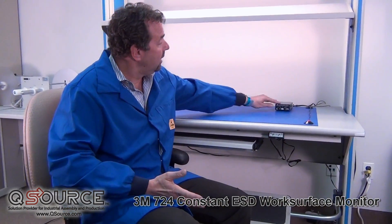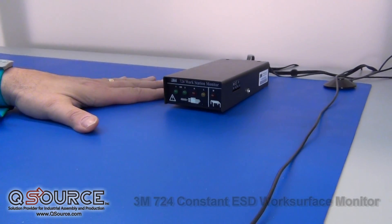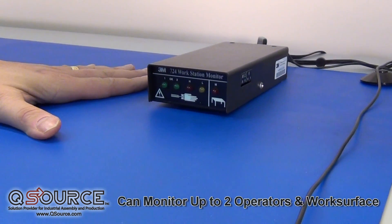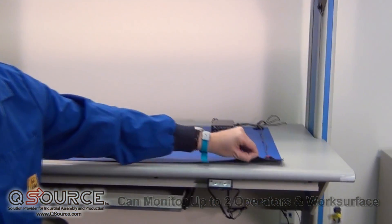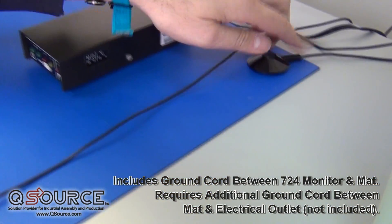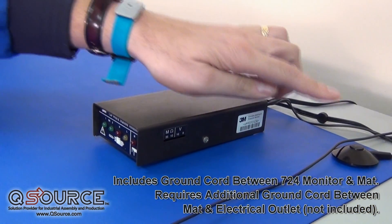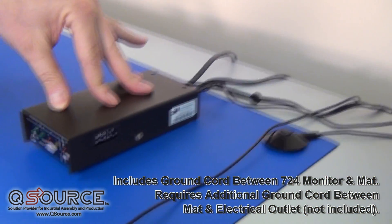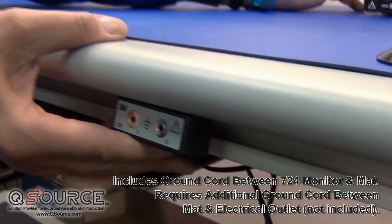That's this unit here. The 3M monitor monitors two operators and the work surface at all times. The mat or bench is grounded using a ground cord from a snap to electrical ground. The monitor comes with a ground cord for the monitor and the wrist strap jack.